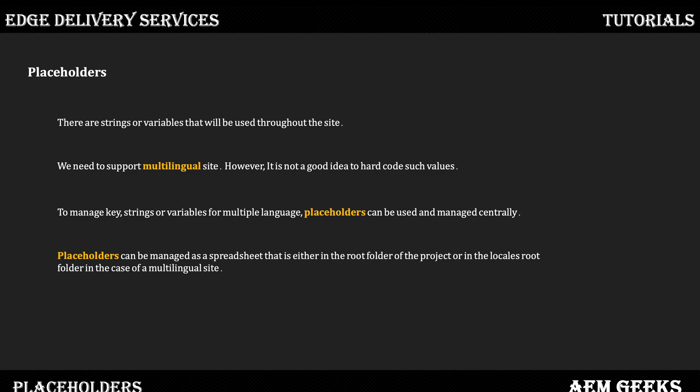So if you have multiple strings or variables being used throughout your different multi-language websites, you store those keys and values in a spreadsheet. This spreadsheet can be stored centrally or in different routes. You can have one spreadsheet and store different language values in one spreadsheet, or you can have multiple spreadsheets within respective routes. For example, if you have two websites — English and French — you can store two spreadsheets, one for English and one for French. This is completely dependent on your implementation.